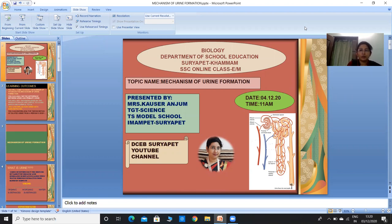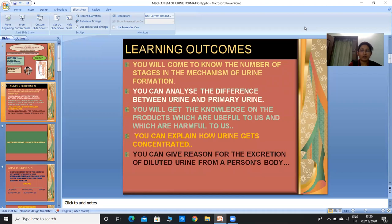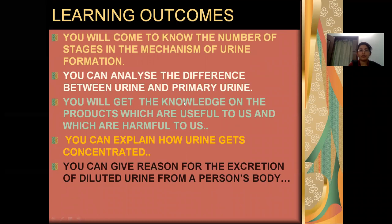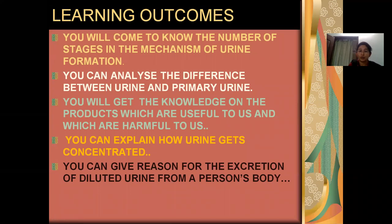Children, today I am here with the topic Mechanism of Urine Formation. Here are the learning outcomes we will see now. After completion of my class, you will come to know the number of stages in the mechanism of urine formation. You will analyze the difference between urine and primary urine, and get knowledge on products which are useful and harmful to us. You can explain how urine gets concentrated, and give reason why a person excretes diluted urine.